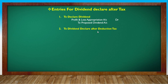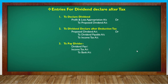Exactly, when we declare a dividend after tax, the entry will be: Proposed Dividend Account debit, to Dividend Payable Account and to Income Tax Payable. The total proposed dividend amount is split - the dividend portion goes to Dividend Payable and the tax portion goes to Income Tax Payable. After that, payment entry: Dividend Payable and Income Tax Account to Bank.